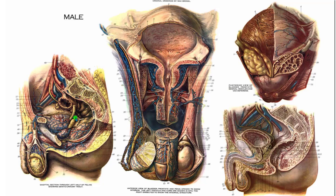Picking back up with the vas deferens, it kind of disappears out of view just above the seminal vesicle, which I can also see from the side here. Again, this is the urinary bladder, and this structure here positioned below the urinary bladder is the prostate gland.